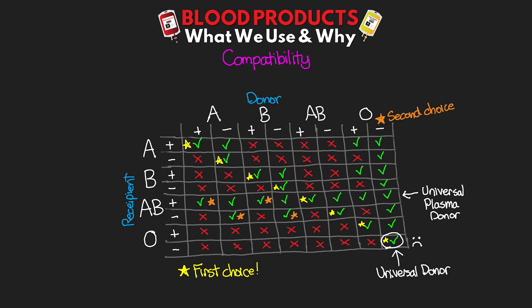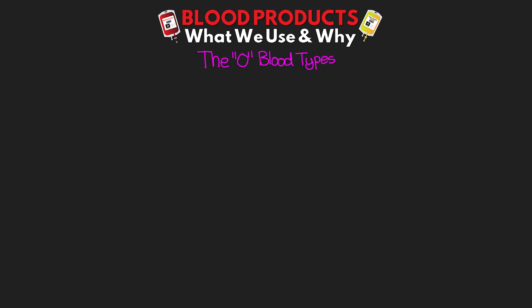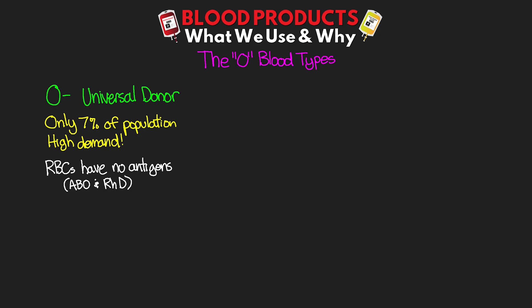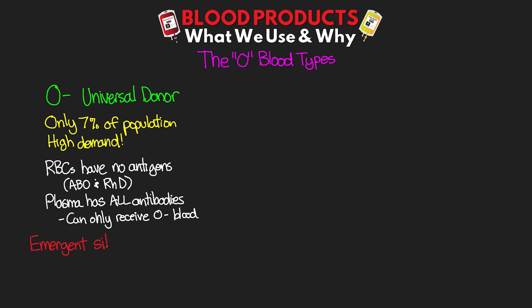I want to talk a little more about our O blood types when it comes to packed red blood cells. O negative is considered the universal donor, but only about 7% of the population is actually O negative. Given the need for tens and sometimes even 100-plus units for some patients, such as bleeding traumas, this makes it really in high demand and the first to run out in a shortage. These red cells have no antigens — no ABO antigens and no RHD antigen since they're negative. So it doesn't matter if the recipient has any antibodies, because there are no antigens to attack. In emergent situations where the patient's blood type is not known, O negative is going to be our most commonly used blood.